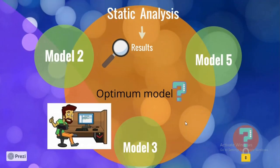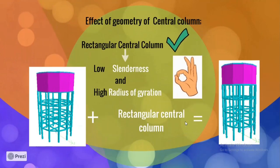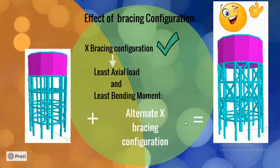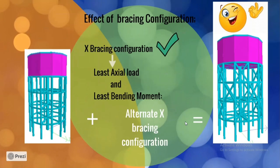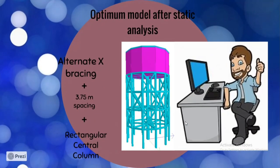The next phase is static analysis, where we analyzed our results to arrive at an optimum model. For effective spacing, the 3.75-meter spacing model is selected. For effective geometry, a rectangular central column is chosen, and for effective bracing configuration, alternate X bracing is found to be better. We finally arrived at alternate X bracing with 3.75-meter spacing and a rectangular central column as our optimum model.